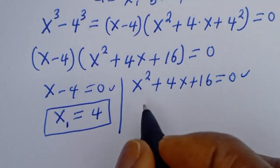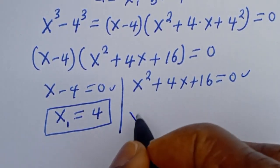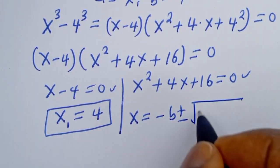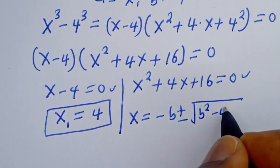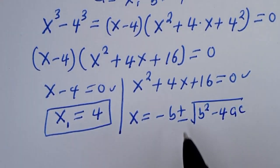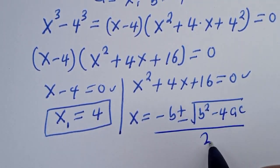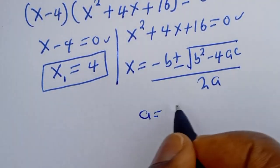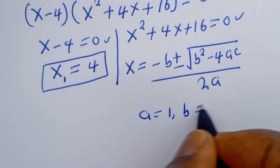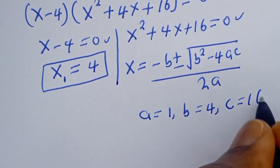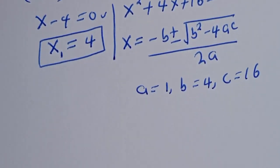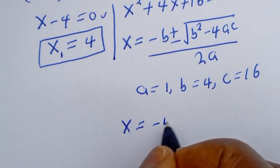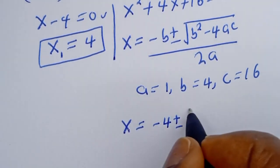From the second case, this is a quadratic equation. We use the general quadratic formula: s is equal to (−b ± √(b² − 4ac)) / 2a. Here a is equal to 1, b is equal to 4, c is equal to 16. So s is equal to (−4 ± √(4² − 4·1·16)) / (2·1).